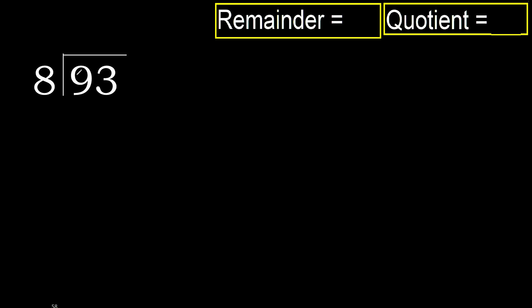93 divided by 8. 9 is not less, therefore with 9: 8 multiplied by which number is nearest to 9 but not greater? 8 multiplied by 2 is 16 — 16 is greater. Multiplied by 1 is 8, which is not greater. Subtract. Remainder 1. Next: bring down to get 13.